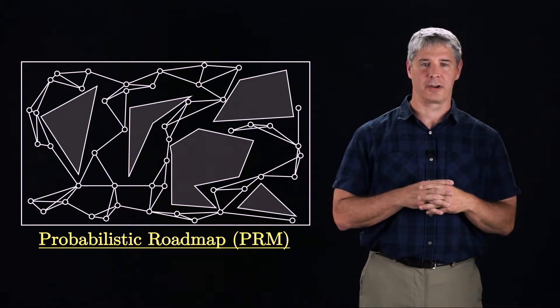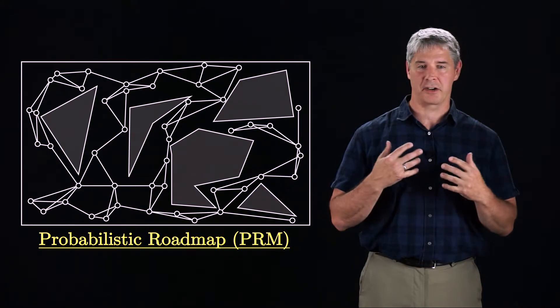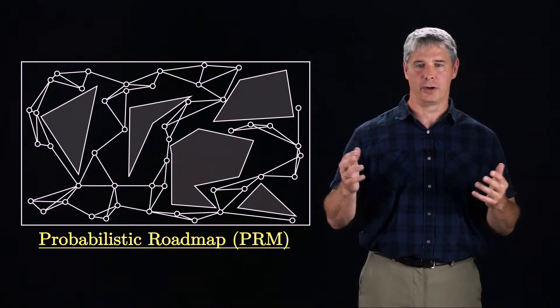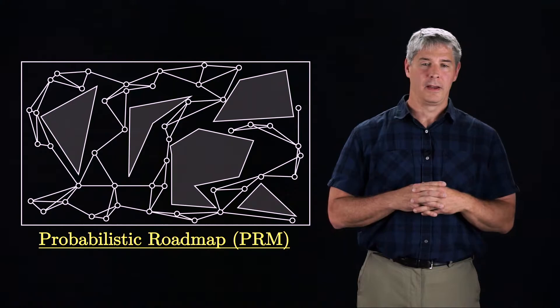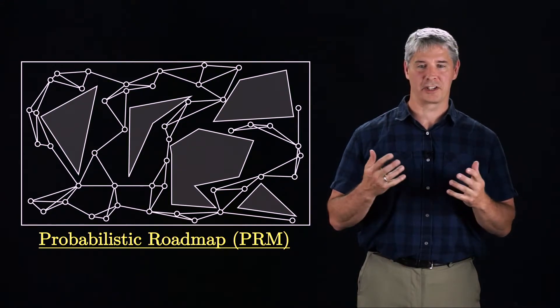An advantage of a PRM graph over a grid-based graph is that the structure of the free C space is generally captured by the PRM with many fewer nodes than with a grid graph. PRMs have been used to solve complex motion planning problems in high-dimensional C spaces.